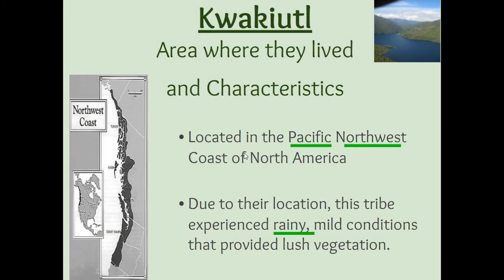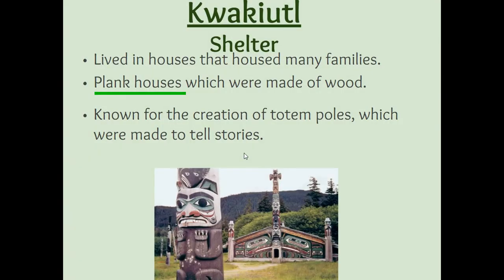Next up is the Kwakiutl. They are in the Pacific Northwest, where they have a very rainy climate. Because it rains a lot in the Pacific Northwest, they have access to lots of vegetation or plants, especially trees. And because of that, they're going to live in what's called plank houses. That access to lots of trees means that they're going to use that natural resource to create their shelter of a plank house.